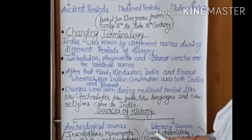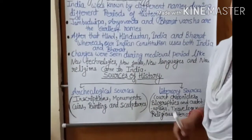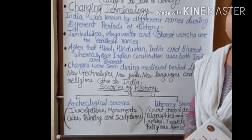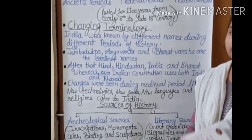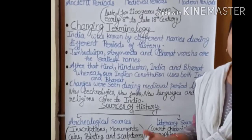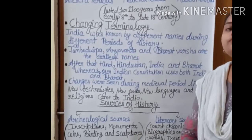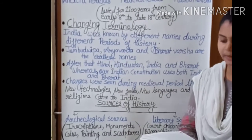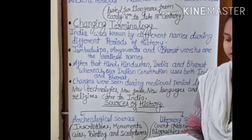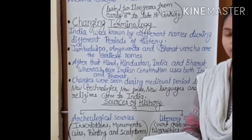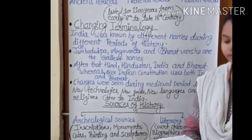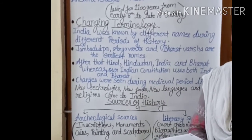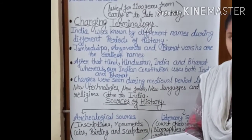Court chronicles are writings written by historians and poets about the victories and the life of the kings. Many court chronicles were written, such as Rajatarangini by Kalhana, Tarikh-e-Firoz Shahi by Ziauddin Barney, and Khazainul Futuh and Tughlaq Nama written by Amir Khusro, and so on.